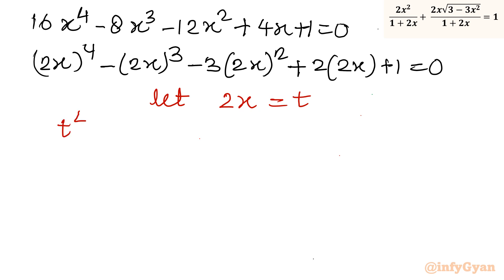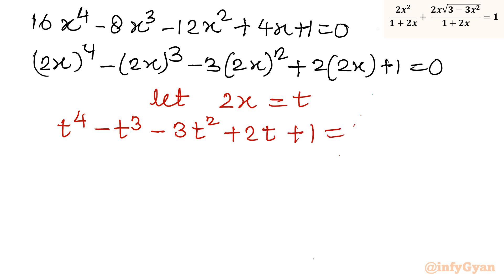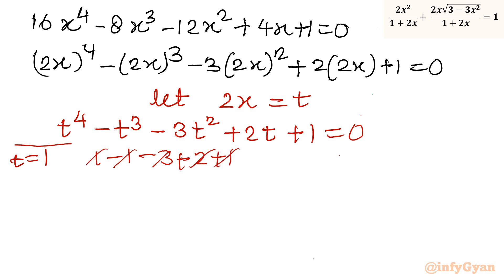With t = 2x the equation becomes t⁴ − t³ − 3t² + 2t + 1 = 0. Testing t = 1: 1 − 1 − 3 + 2 + 1 = 0. Yes, that is true, so t = 1 is a confirmed solution. Since t = 2x = 1, our first real solution is x = 1/2.